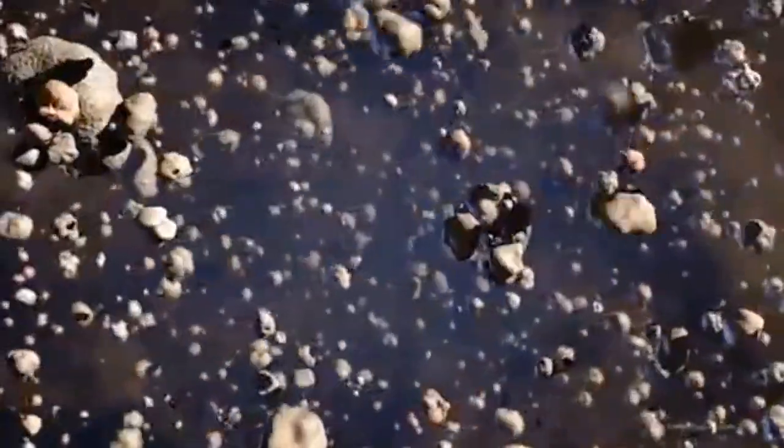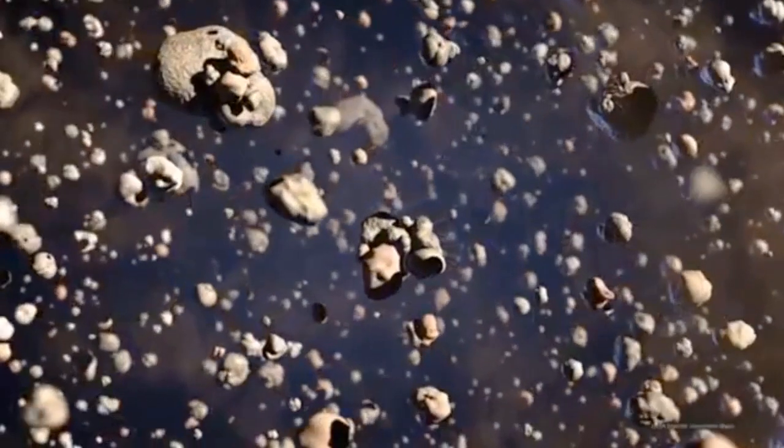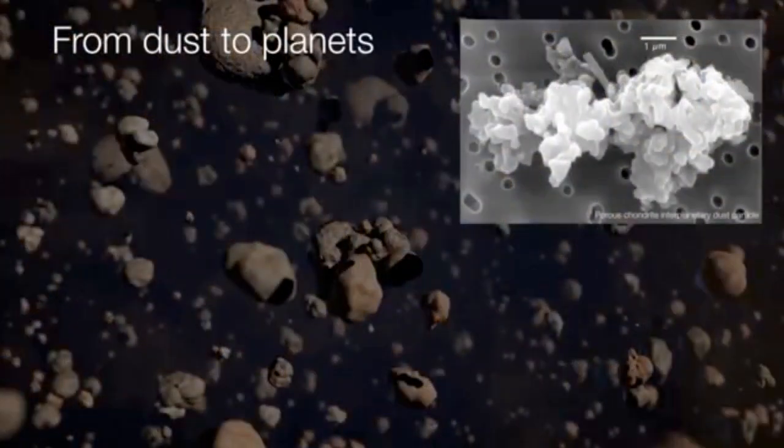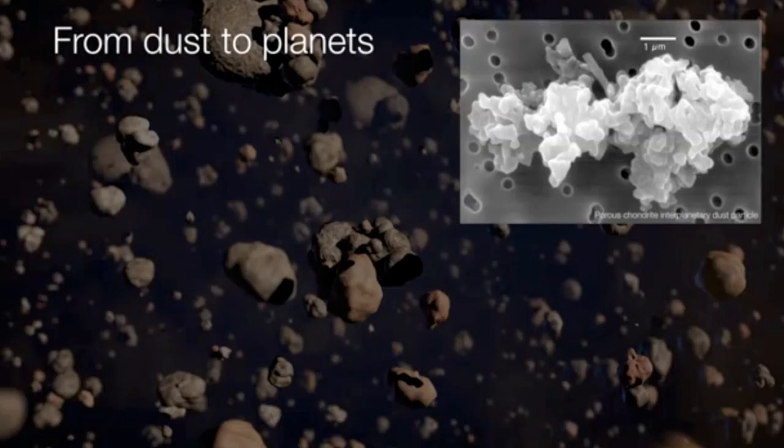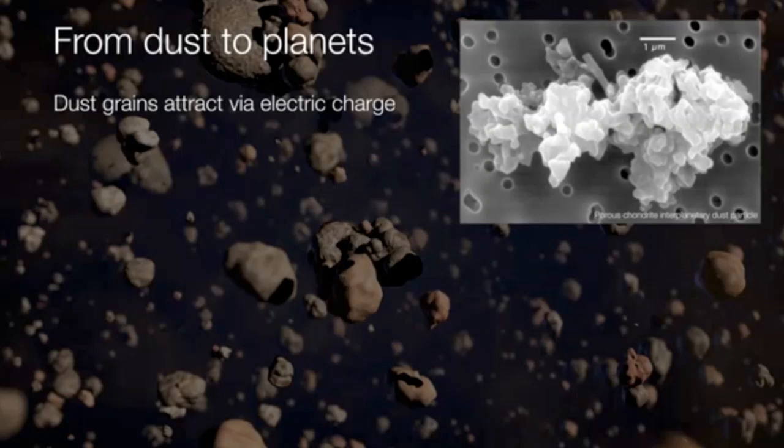So how does a spinning disk of gas and dust go on to become planets? Well, in order for us to think about that, we have to change our perspective. We have to go deep inside the circumstellar disk, and instead of thinking about the disk as a whole, we need to change our scale and get smaller until we are finally at the scale of individual grains of dust.